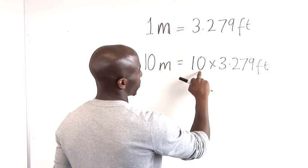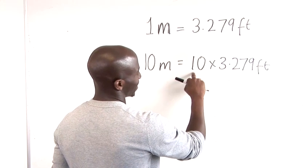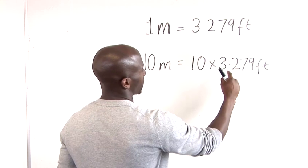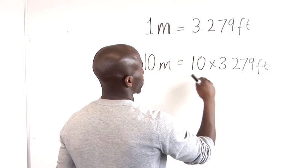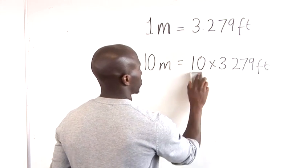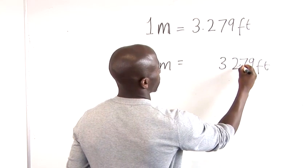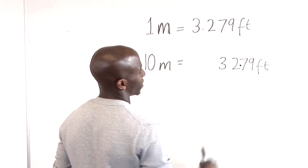So whenever we are multiplying by 10, we just move the decimal point one space to the right. So that gives us 32.279 feet.